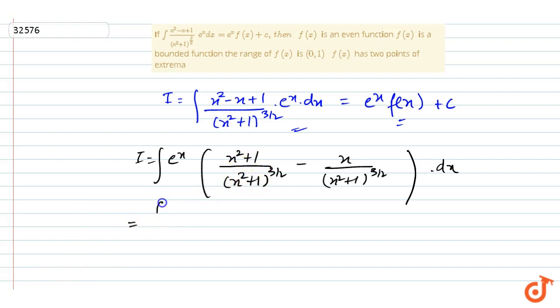And if we cancel here, we have e^x upon square root of (x² + 1). Then the derivative of the function (x² + 1) is 2x, and here we have to get minus x upon (x² + 1).